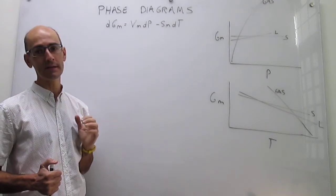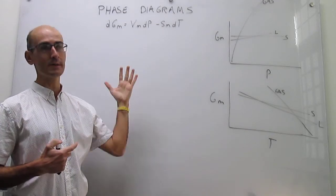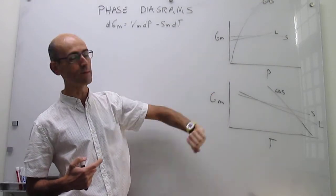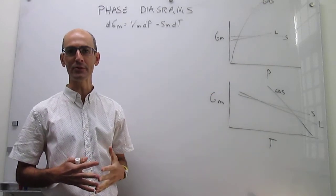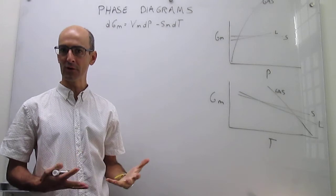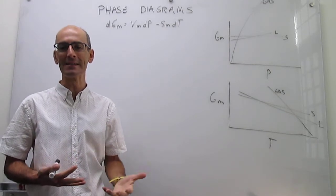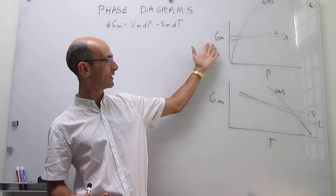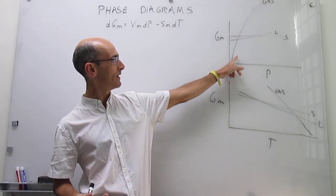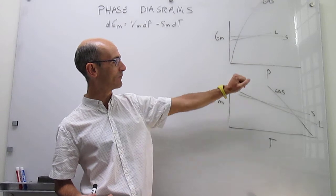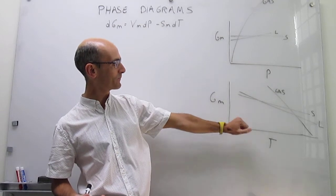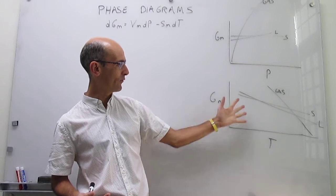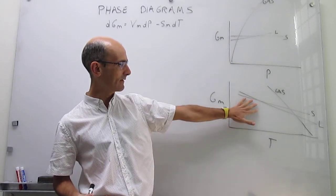What we have done is learned how this equation can be used to graph the dependence of the molar Gibbs energy on pressure and temperature for common substances in the gas, liquid, and solid phases. The molar Gibbs energy changes with pressure according to this diagram for a gas, liquid, and solid, and then the molar Gibbs energy changes with temperature for a gas, liquid, and solid like this.